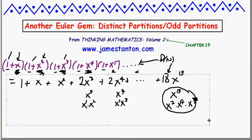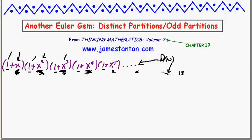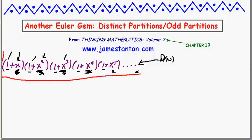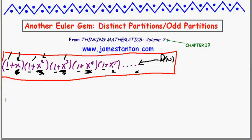That's step one of what Euler did in that one evening. If you want to study the sequence D(N), just expand this function — which I'll put in a red box — and the sequence D(N) will appear as the coefficients of each power of x. Now, can we do a similar trick for O(N), the odd partitions?